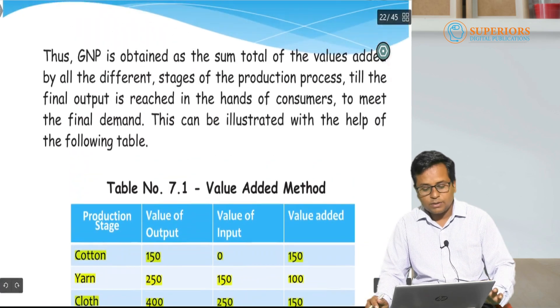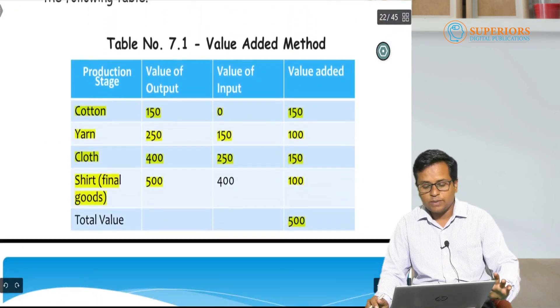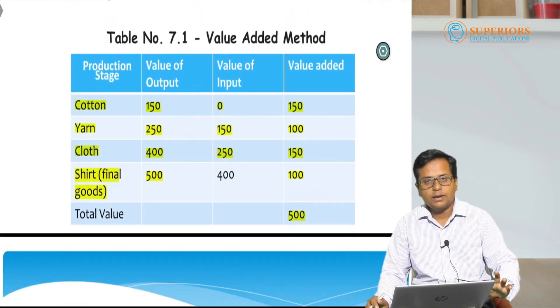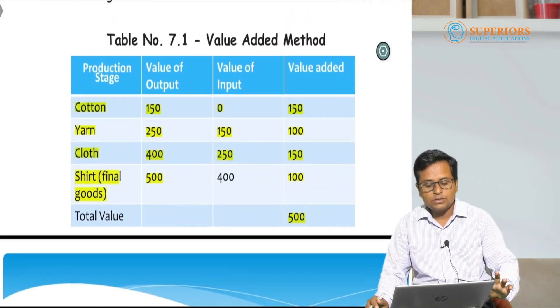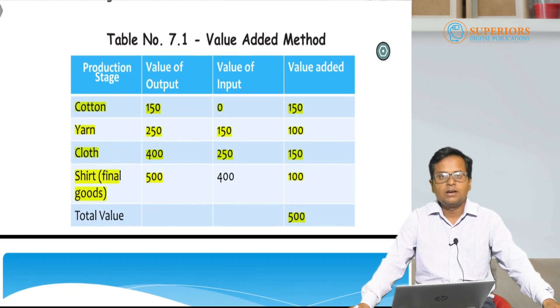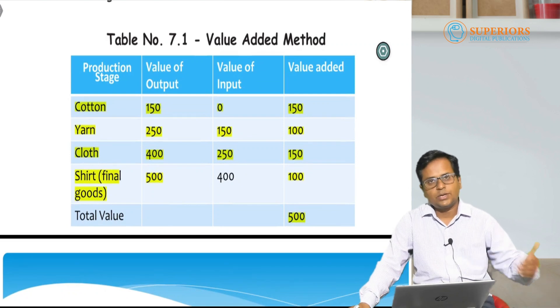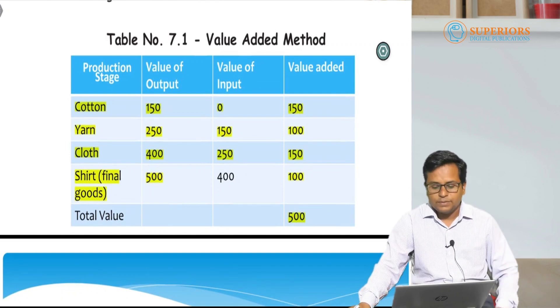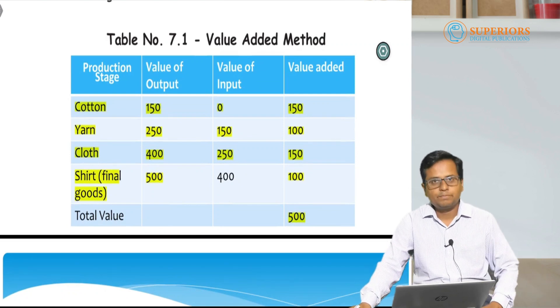In this way, to avoid double counting, we can use the value-added method for measuring national income.